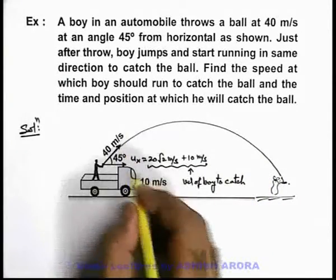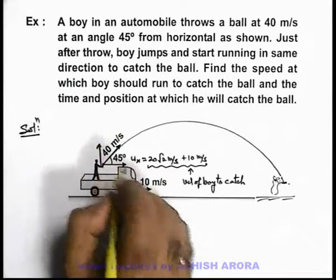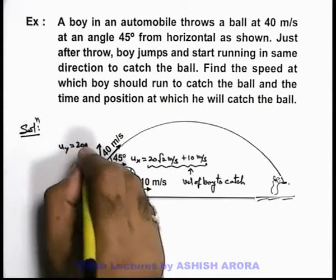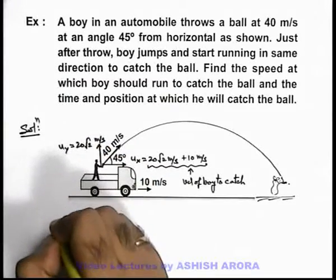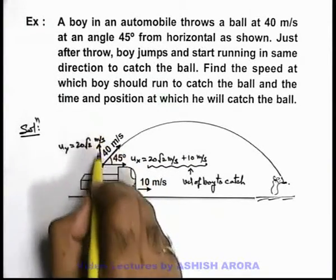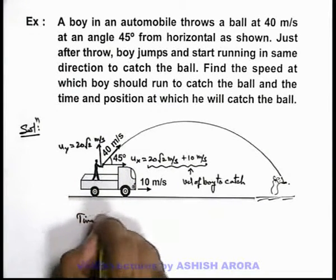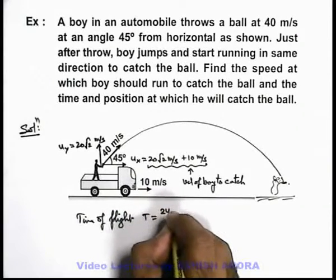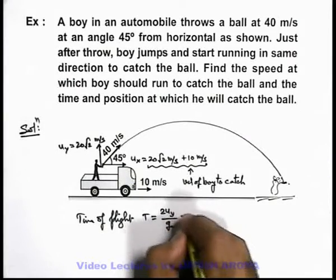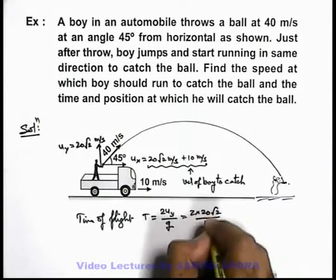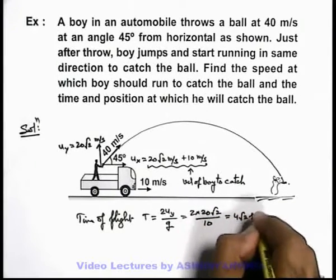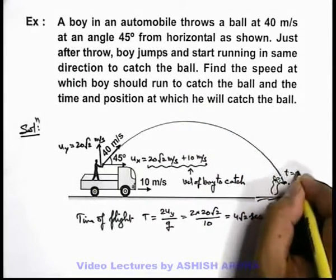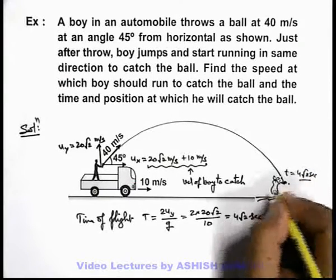To find the time, we analyze the y direction motion. The vertical velocity of the ball is 40 sin 45, which is again 20 root 2 meters per second, with which the ball is thrown up. The time of flight of the ball can be calculated using the relation 2 u_y by g, which is 2 times 20 root 2 divided by 10, giving us 4 root 2 seconds. So the time at which the ball will be caught by the boy is 4 root 2 seconds.